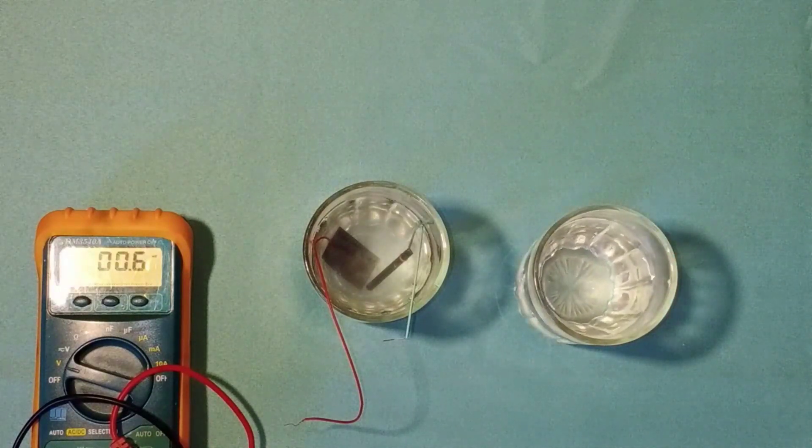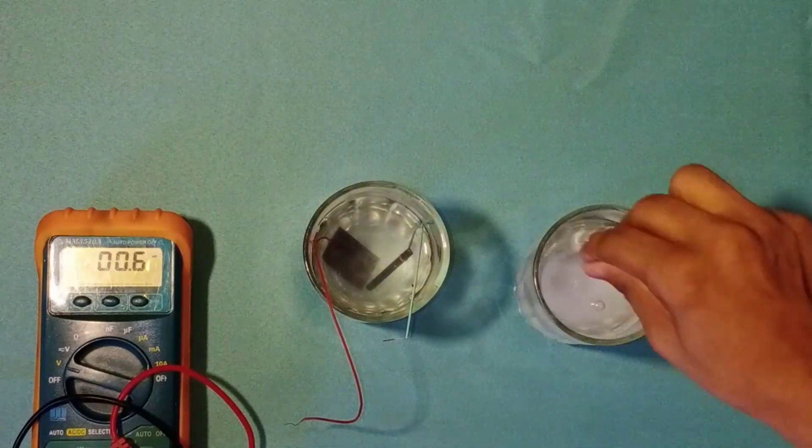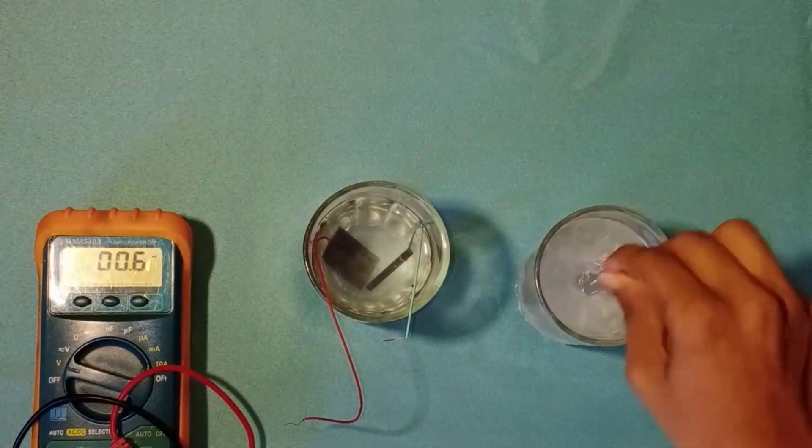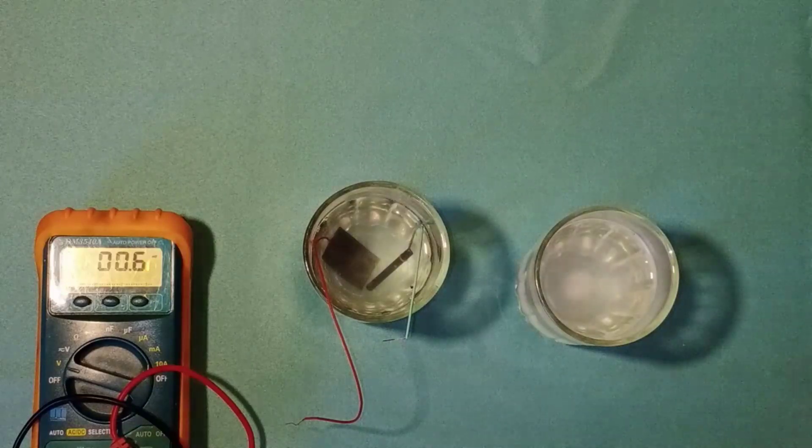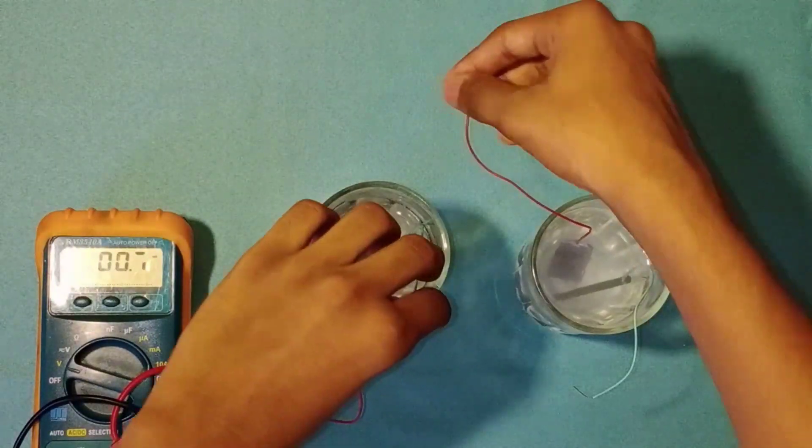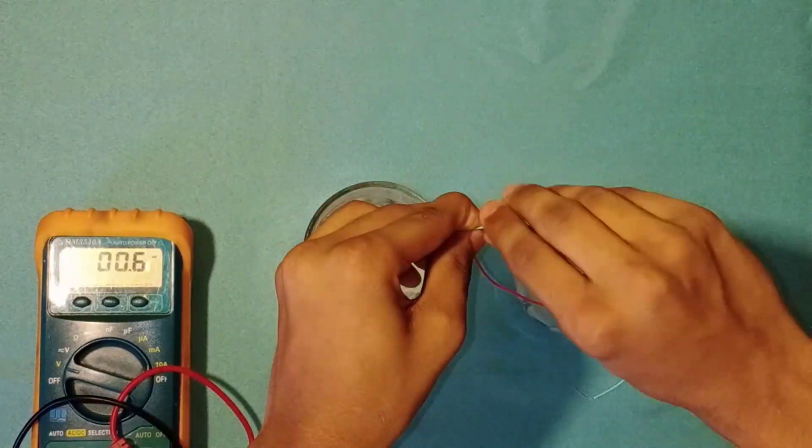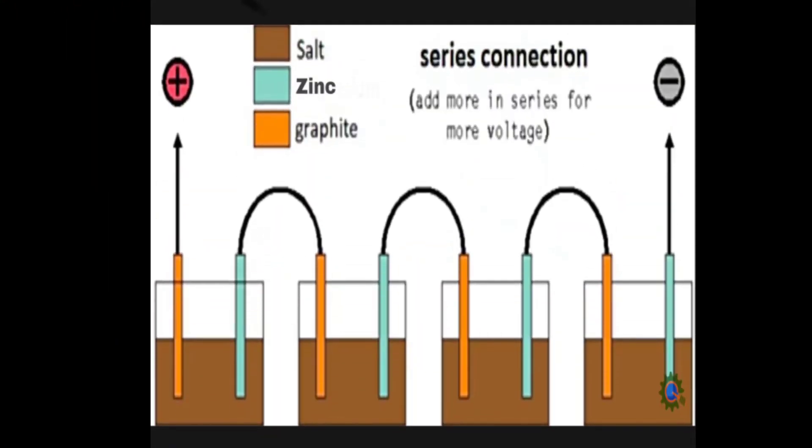Then do the same process in another glass. Then connect the zinc plate wire to graphite in series.